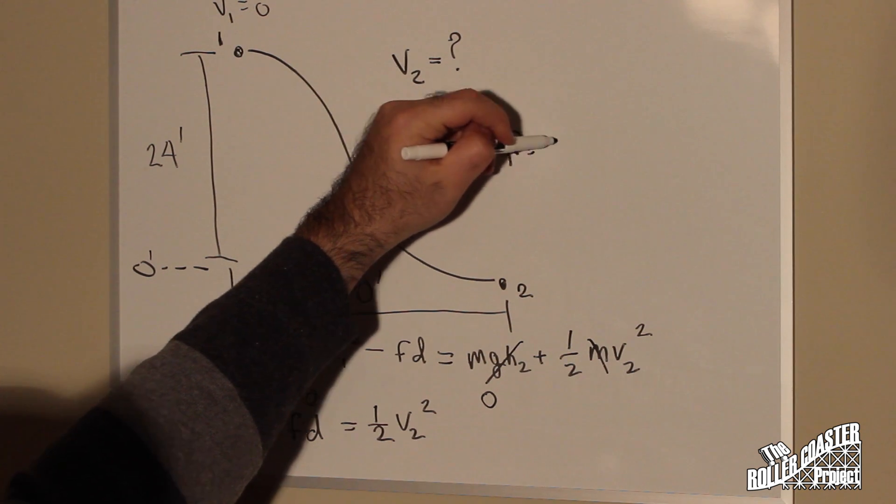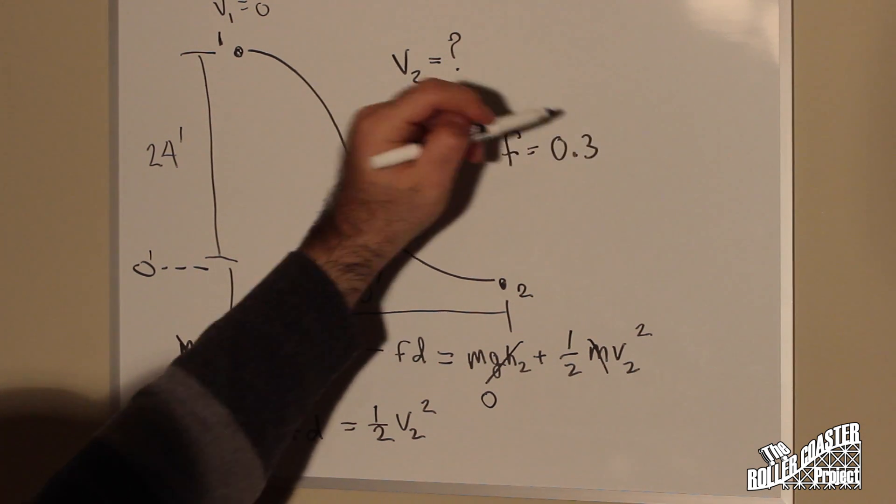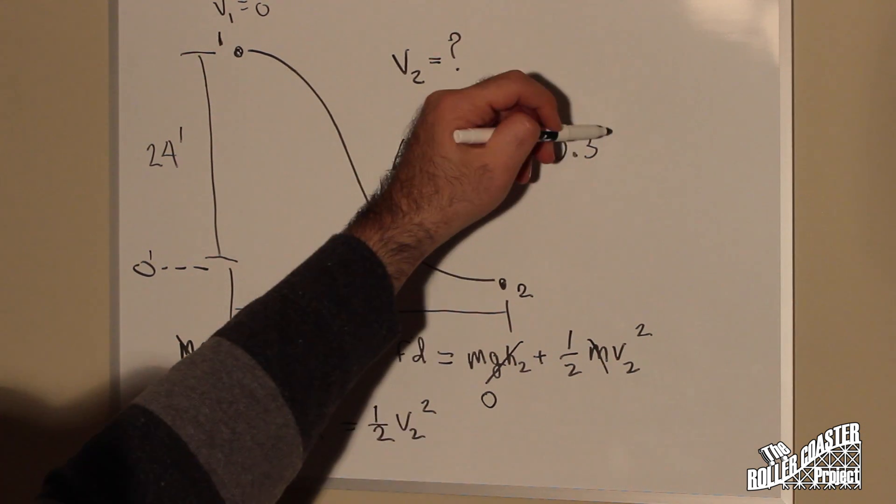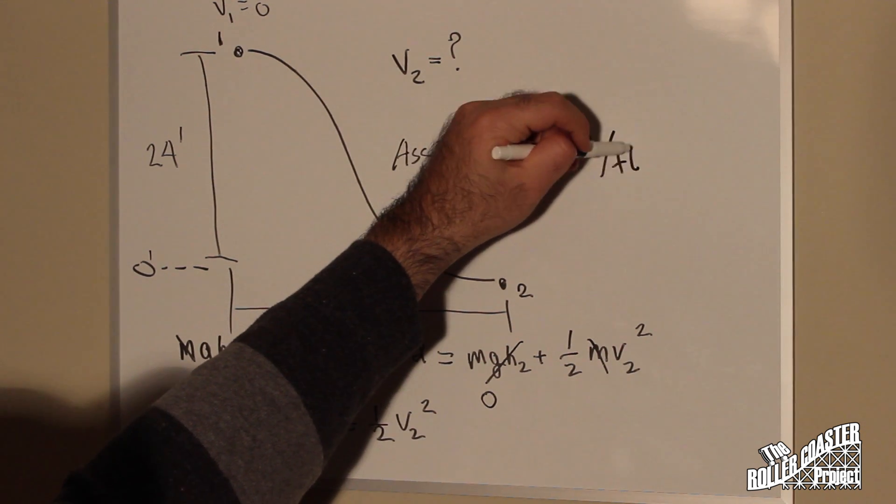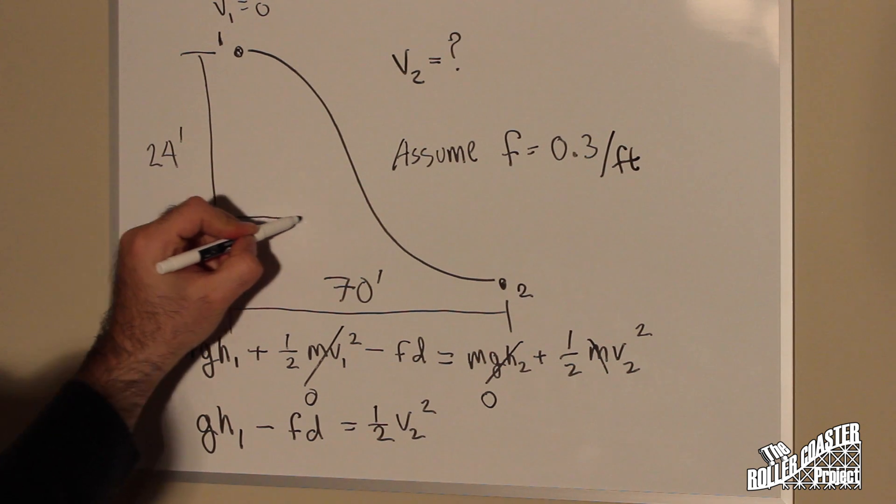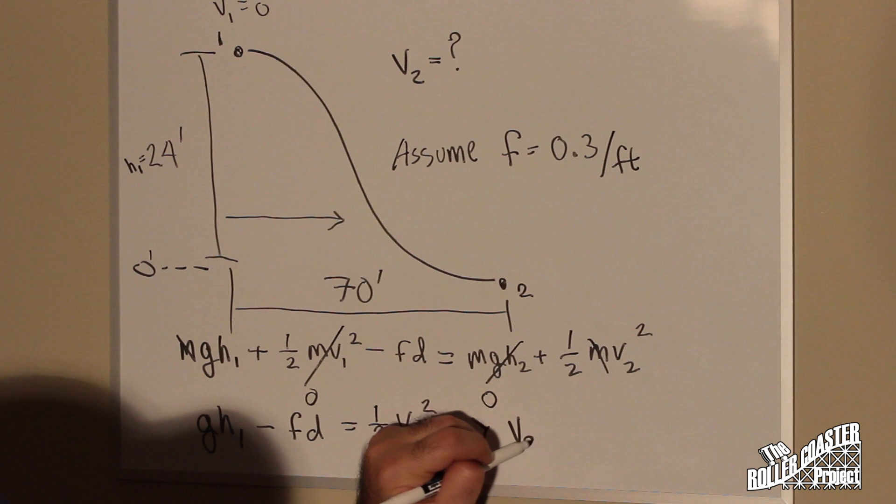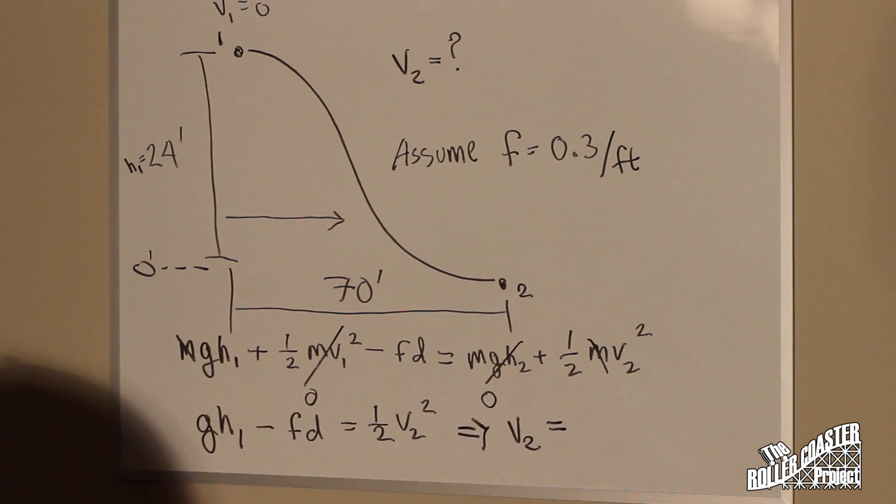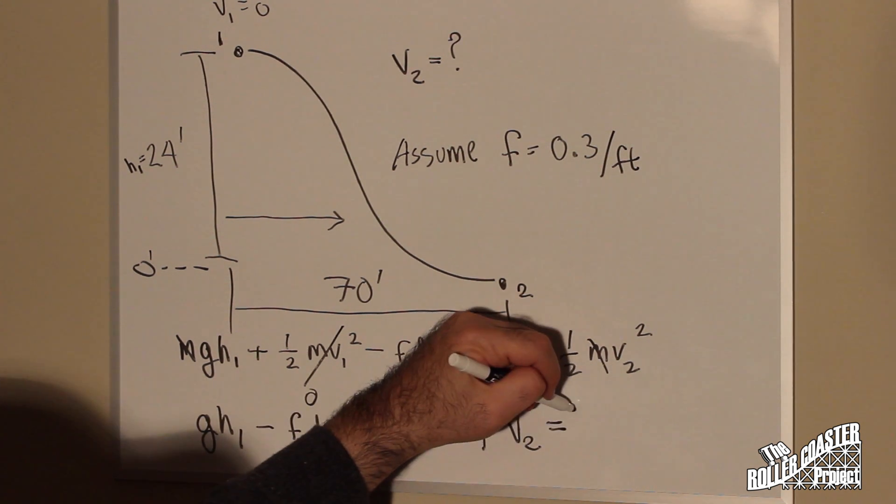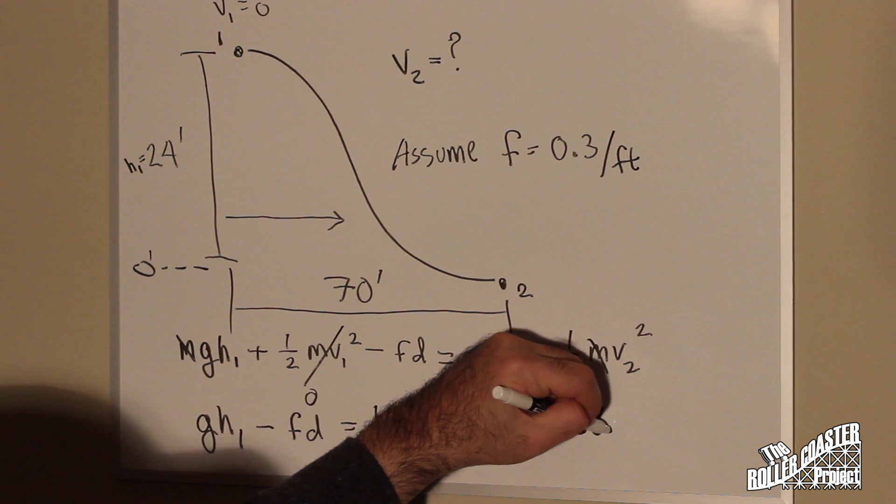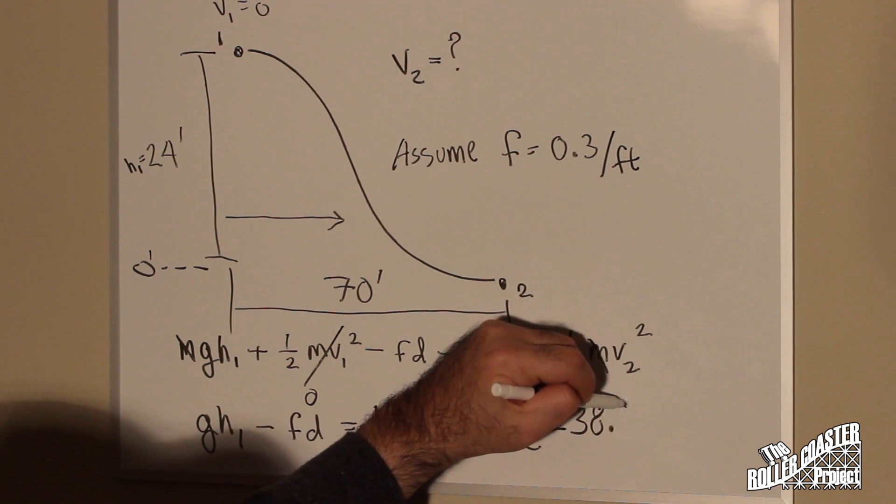There's our friction value assumption. Not to be confused with a coefficient of friction, this is our value per foot. We're going to see how much work is going to happen in this system. We end up with 38.78 feet per second, which is roughly 26.44 miles per hour.